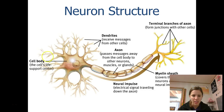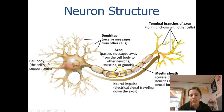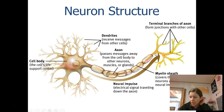Then what happens is the information travels down to the next part of the cell, which is called the axon. The axon is this really elongated part of the neuron, and what it does is it carries information to the back of the cell — there's a specific way it does that, which we'll talk about in a second.